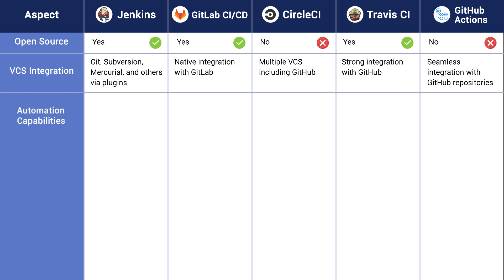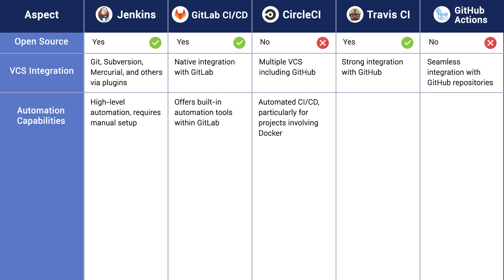Regarding automation capabilities, Jenkins has high-level automation and requires manual setup. GitLab CI/CD offers built-in automation tools with GitLab. CircleCI has automated CI/CD, particularly for projects involving Docker. Travis CI has automated CI/CD with a focus on open source projects. And GitHub Actions has rapid automation integrated into GitHub.